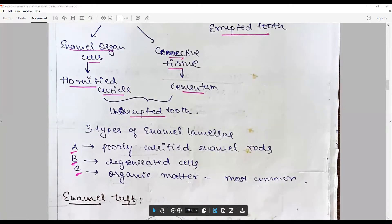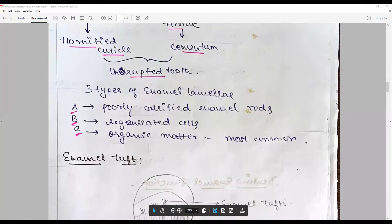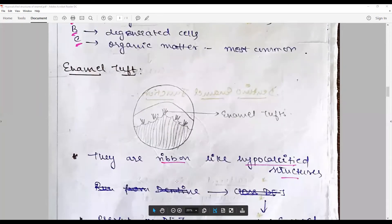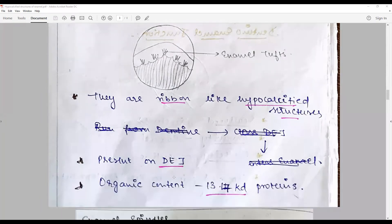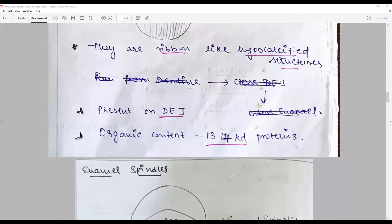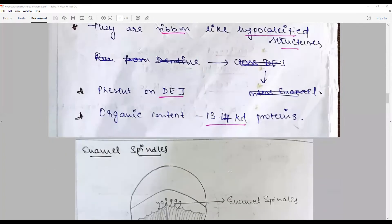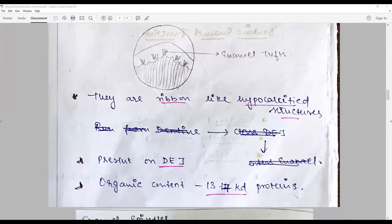Enamel tufts are ribbon-like or tuft of grass-like hypocalcified structures seen along the DEJ, extending to various lengths into the enamel. Their organic content is mainly proteinaceous in nature. They are a response to curvature stress. The DEJ is a corrugated surface.